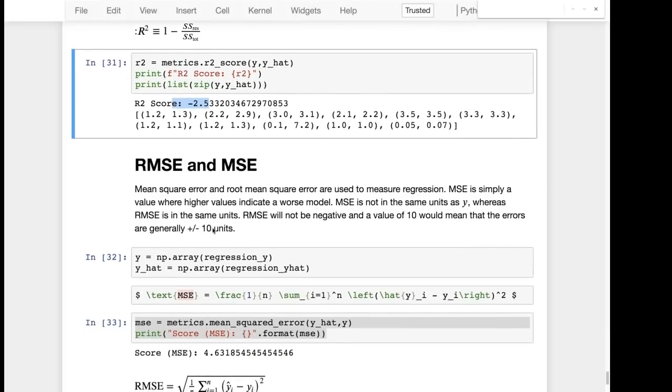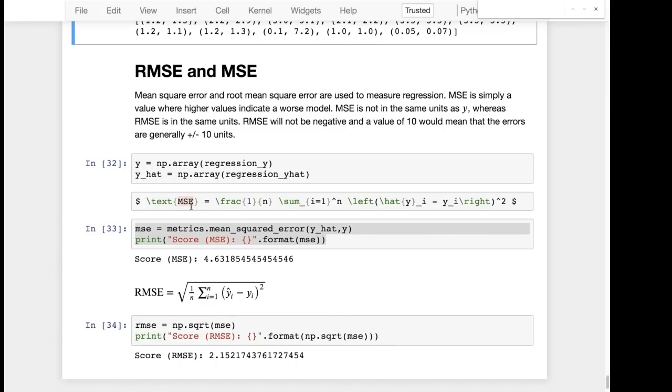RMSE and MSE are not. MSE is essentially a number that the higher it is the worst your model is predicting. The numbers really don't mean anything for MSE. You're not really bringing them back to the original units that your y was in. And you're simply calculating them. RMSE you take basically the square root of the MSE.